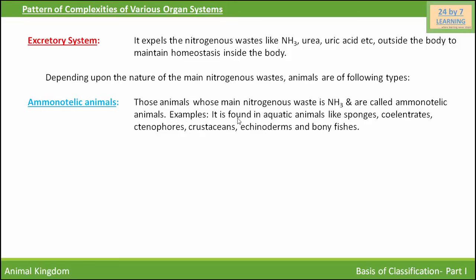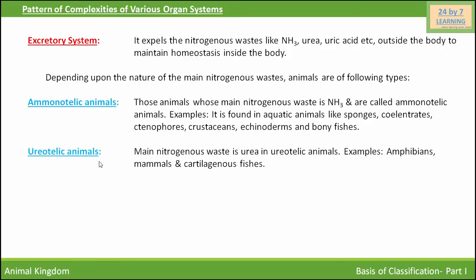Ammonotelic animals are found among aquatic animals, for example sponges, coelenterates, ctenophores, crustaceans, echinoderms, and bony fishes. Next are ureotelic animals, whose main nitrogenous waste is urea.